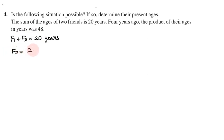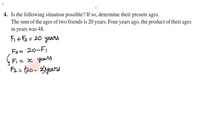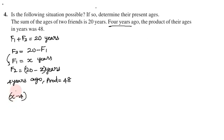Let friend one's present age be x years, so friend two's present age is 20 minus x. Four years ago, friend one's age was x minus 4, and friend two's age was 20 minus x minus 4, which equals 16 minus x.